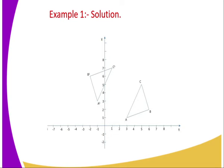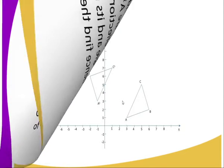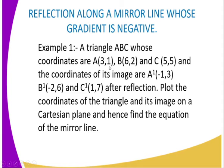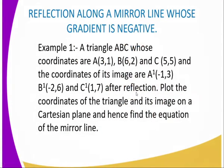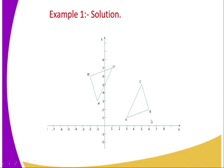You can see on the diagram the object triangle ABC and also its image A', B', and C' have been exactly plotted according to the values given in the question. You can confirm: A was (3, 1) and it is perfectly plotted, B was (6, 2) and it is exactly plotted, and C was (5, 5) and it is also exactly at that point. This is the object and this is the image.